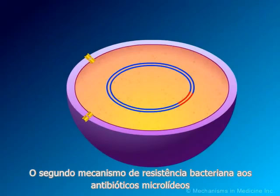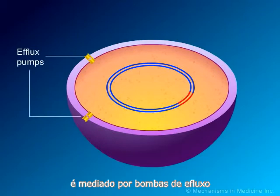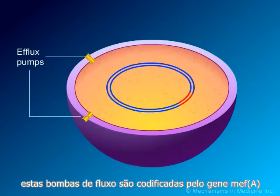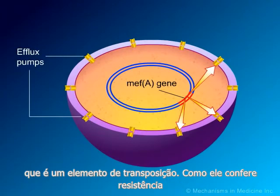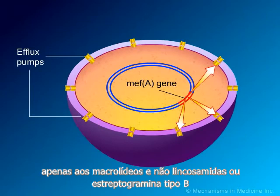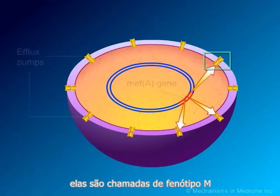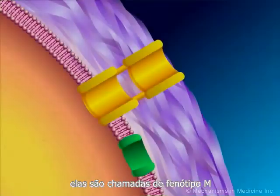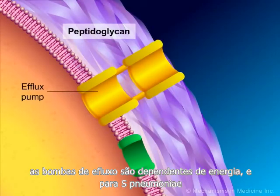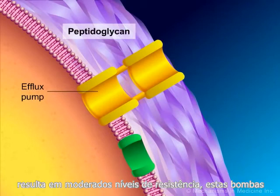A second mechanism of bacterial resistance to macrolide antibiotics is mediated by efflux pumps. These efflux pumps are encoded by the MEFA gene, which is a transposable element. Because they confer resistance to only macrolides and not lincosamides or streptogramin B, they are referred to as the M phenotype. The efflux pumps are energy-dependent and, for S. pneumoniae, result in moderate levels of resistance.